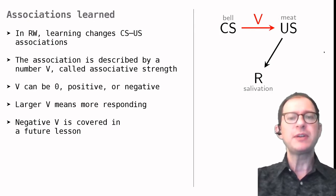For now, just remember that in RW learning is described as the growth of a CS-US association. RW describes this association with a number, the associative strength V, that can be zero, positive, or negative.